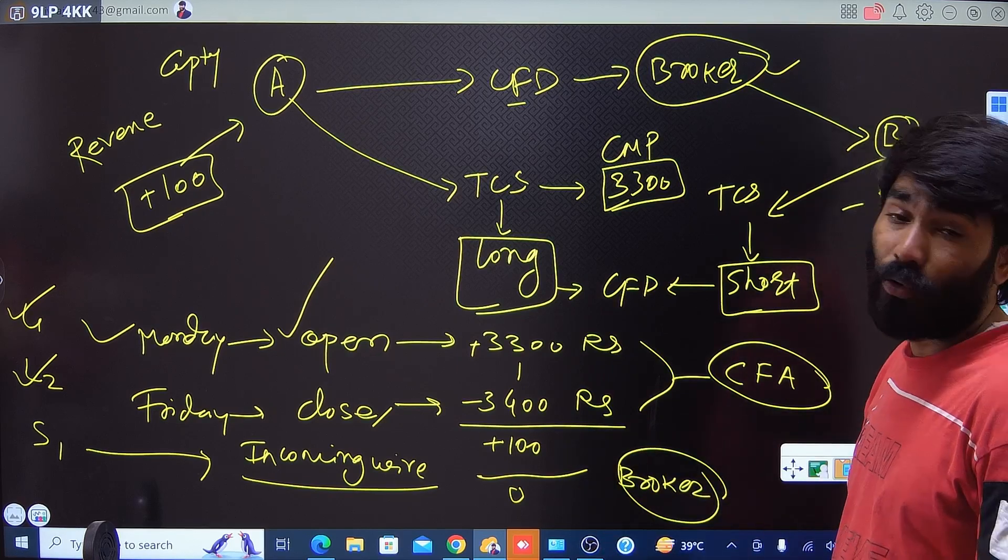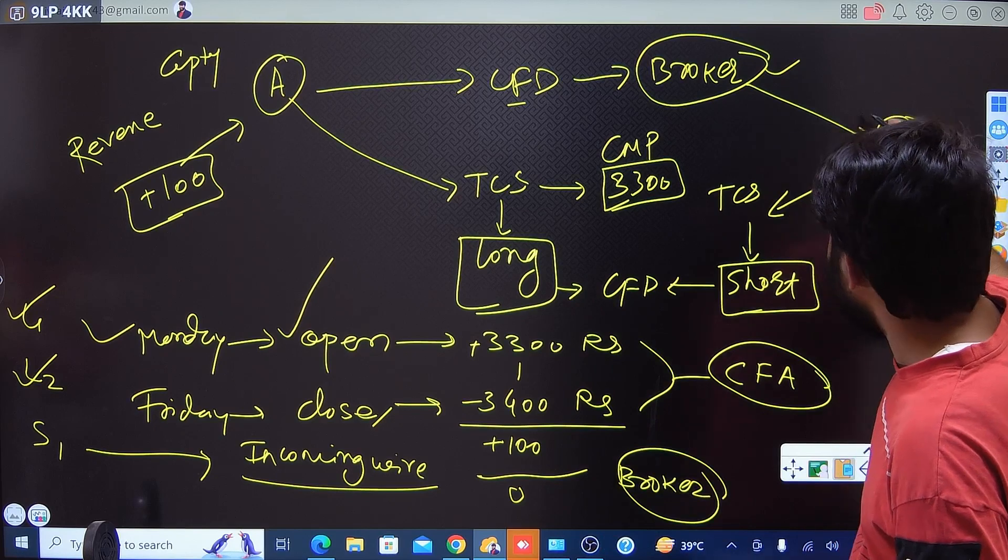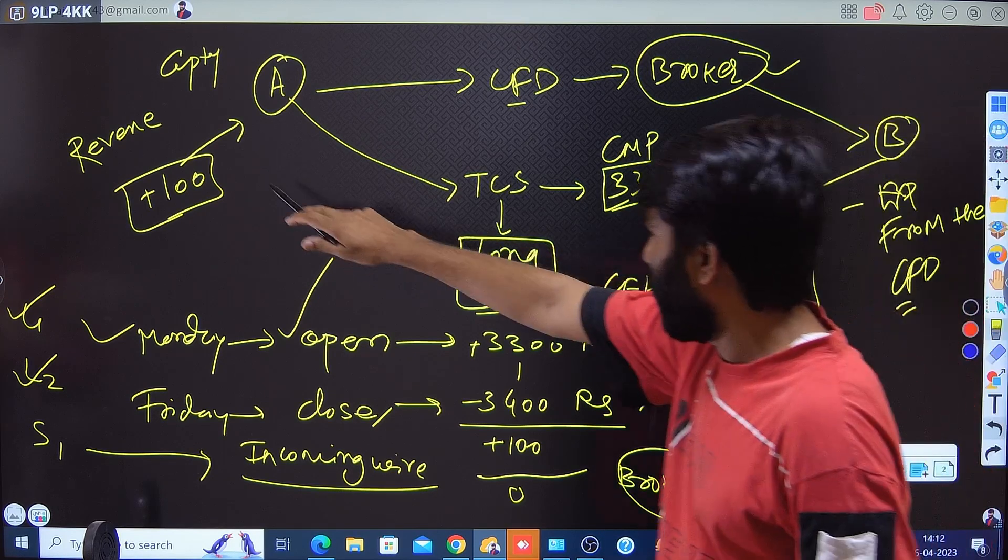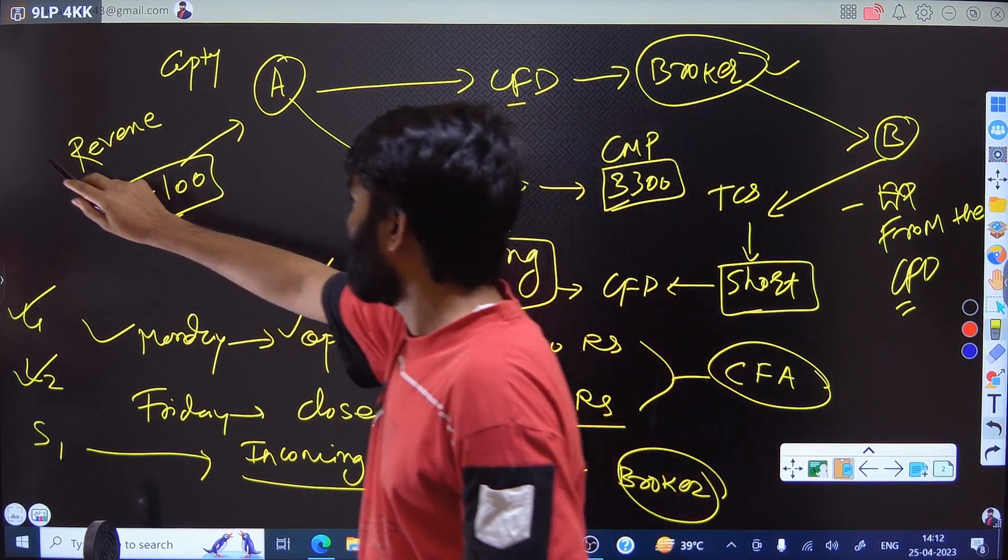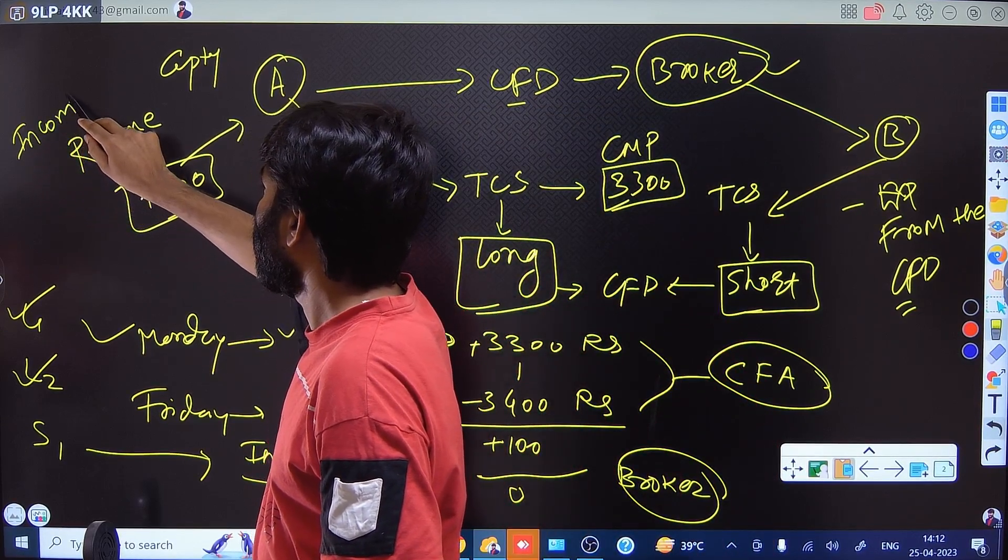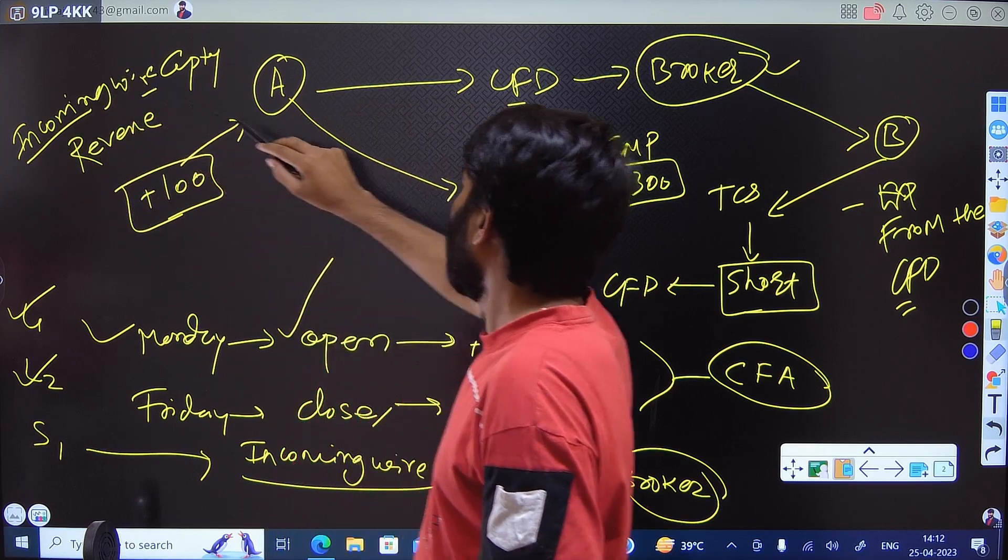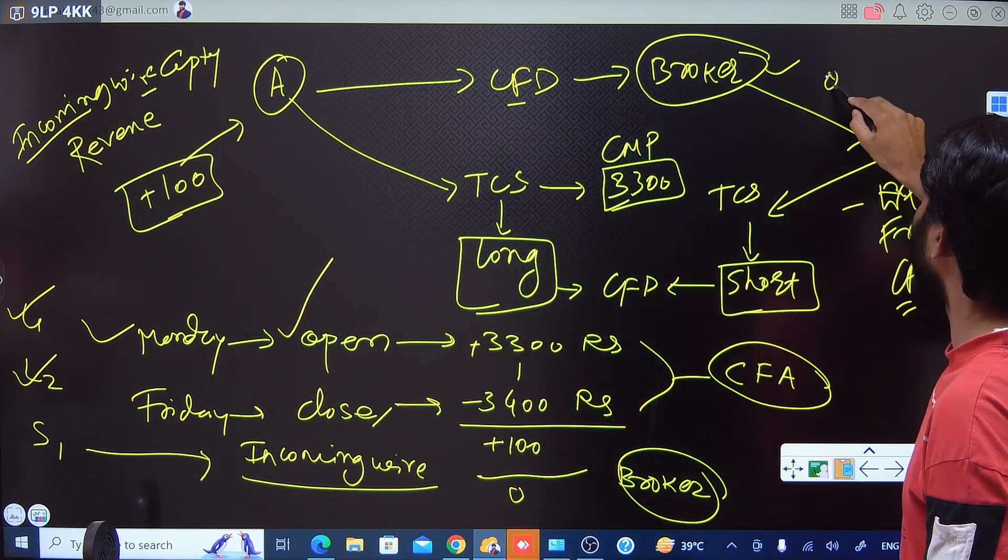After the close, whatever the difference you see in the price from open and close price, that difference you will receive as incoming or outgoing wire. Because for counterparty B it will be vice versa. For A it has become revenue, it becomes incoming wire, and for counterparty B it will be outgoing wire.